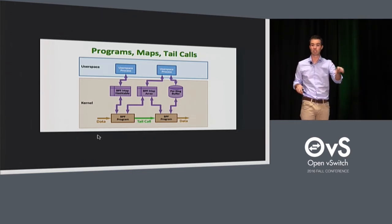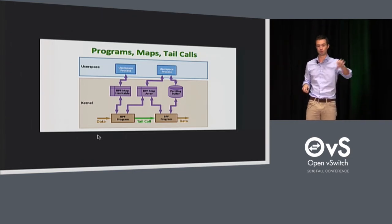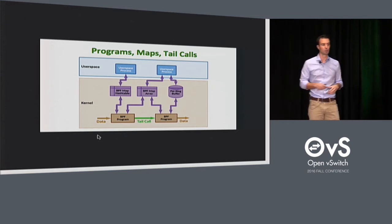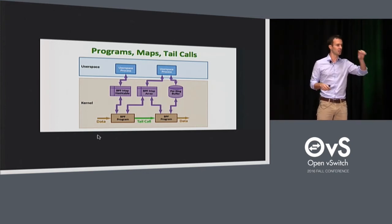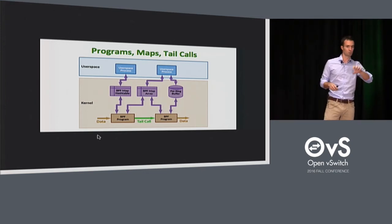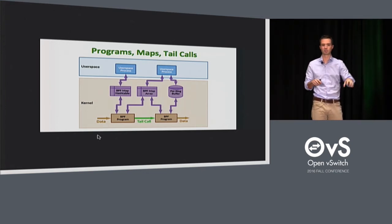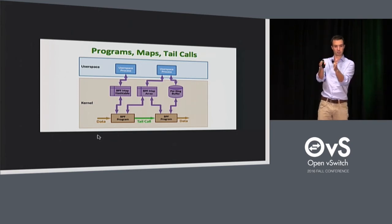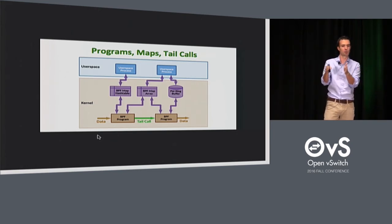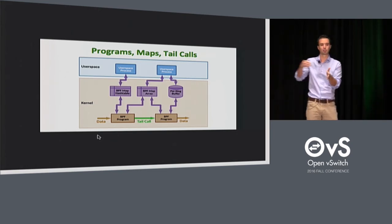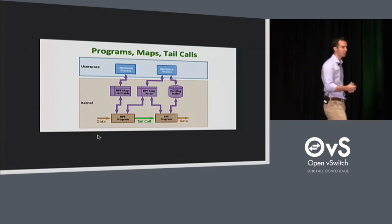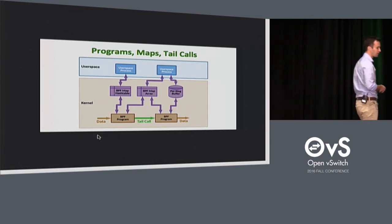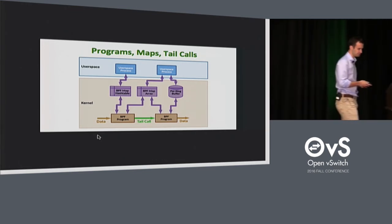With tail calls, you can take some state with you. So you can parse a packet, perform some actions, build up state, do a tail call into another program, and continue on. This allows you to build up more complicated programs.